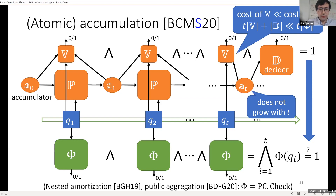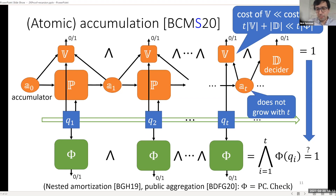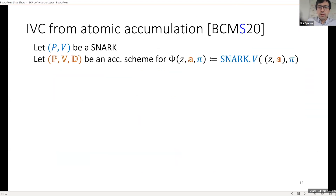Special cases of this include the nested amortization from Halo and also public aggregation schemes. In particular, if you set φ to be a polynomial commitment checking predicate, then this is what you get.